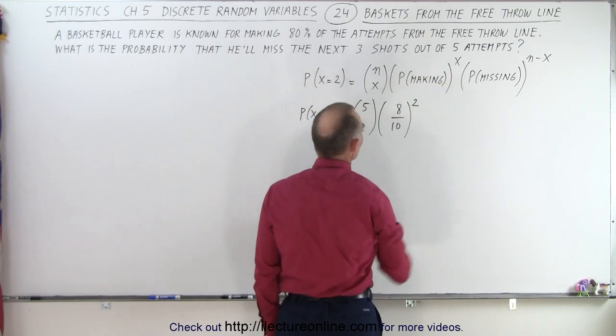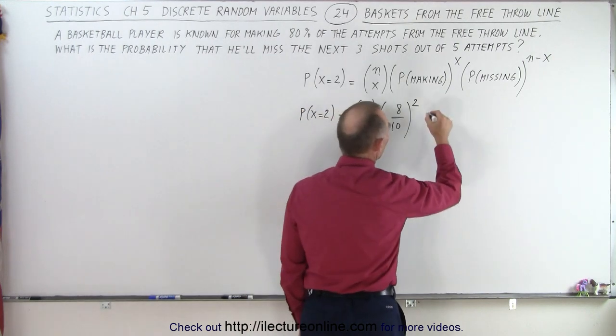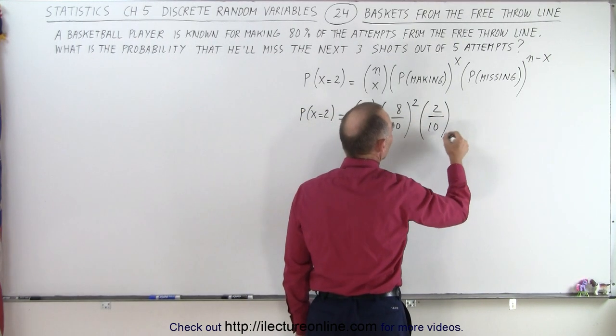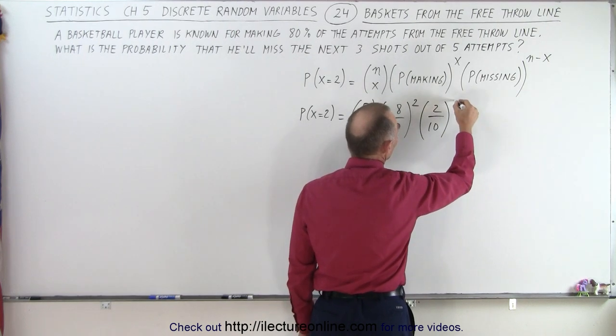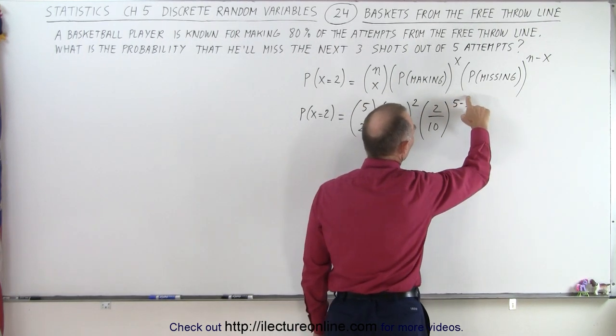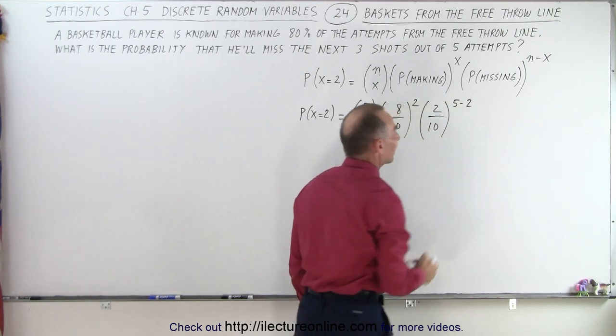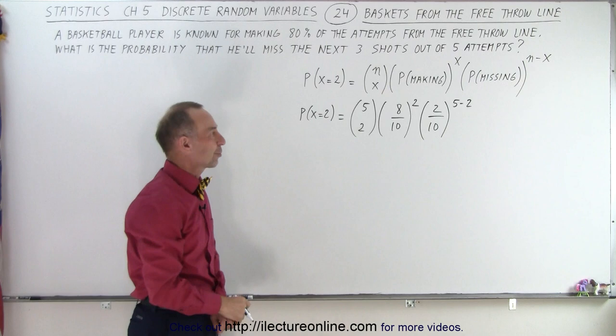And x, of course, is going to be two in this case. And then the probability of missing a basket is two out of ten. And there we have n minus x, which in this case would be five minus three. Oh, not minus three, minus two, because he's going to make two and he's attempting five, so he's going to miss three.